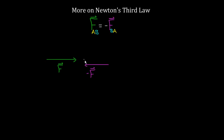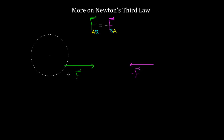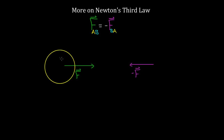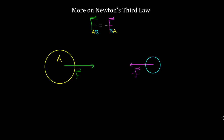Let's draw two different objects to show explicitly what I mean. So if there's object A with this green force F exerted on it, and there's another object B that has this pink force, negative F, exerted on it — now we're okay. Now we know these forces can't cancel, because they're on two different objects. When you just say Newton's third law means every force has an equal and opposite force, it's not clear that it has to be on different objects, but it does have to be on different objects.